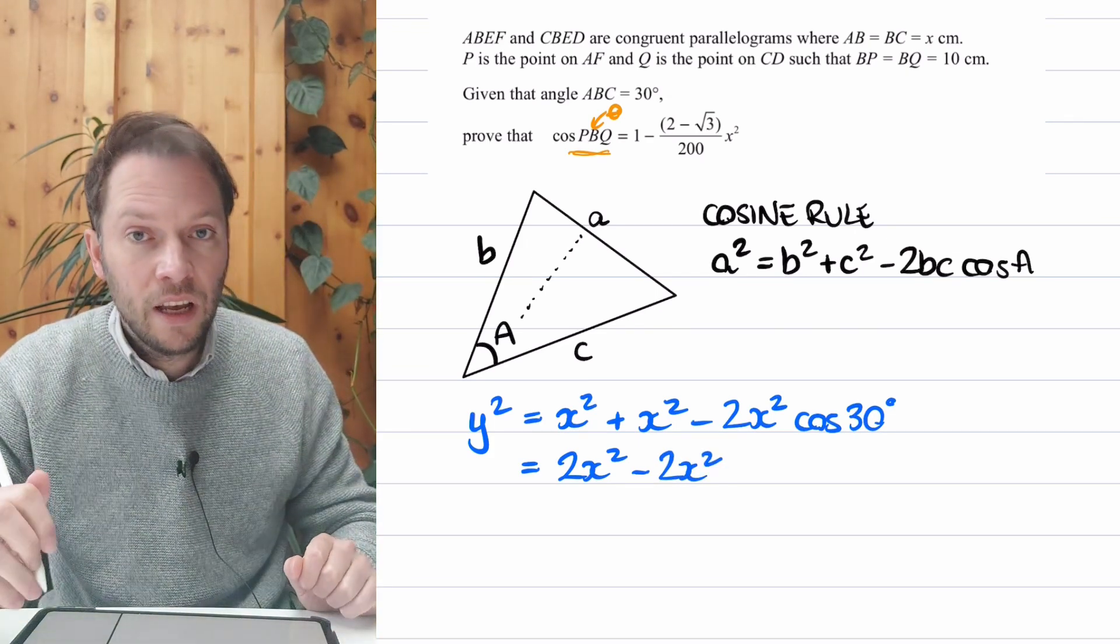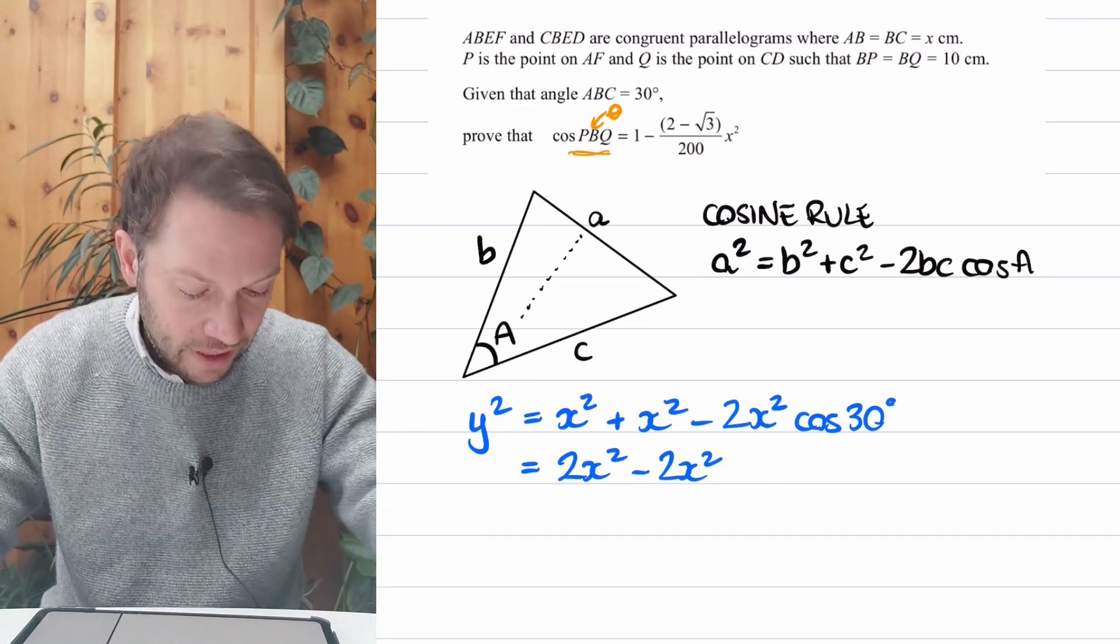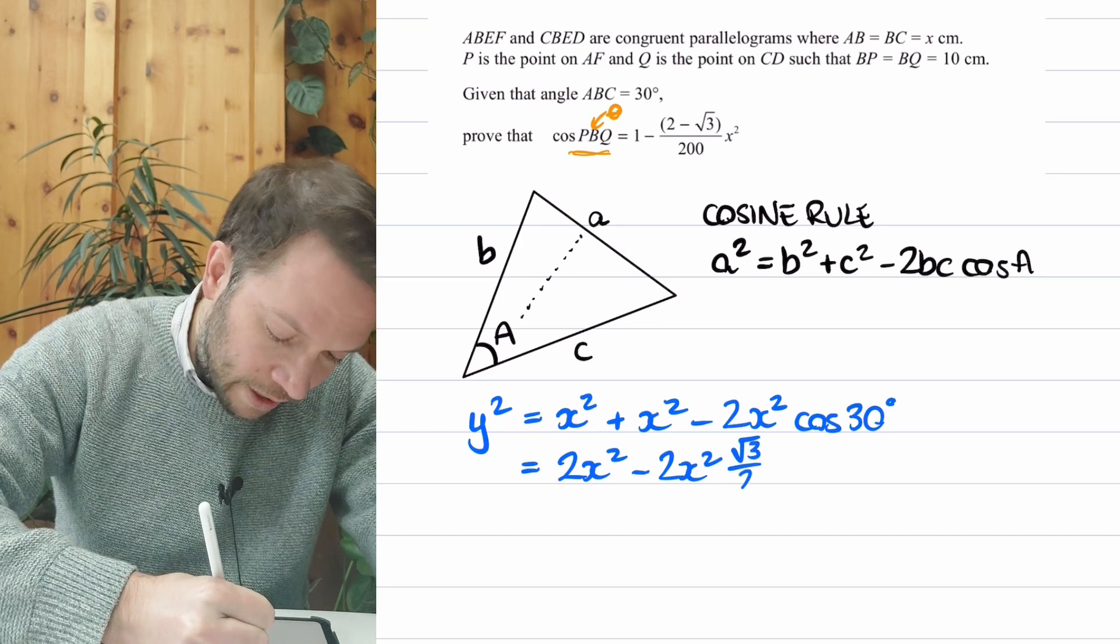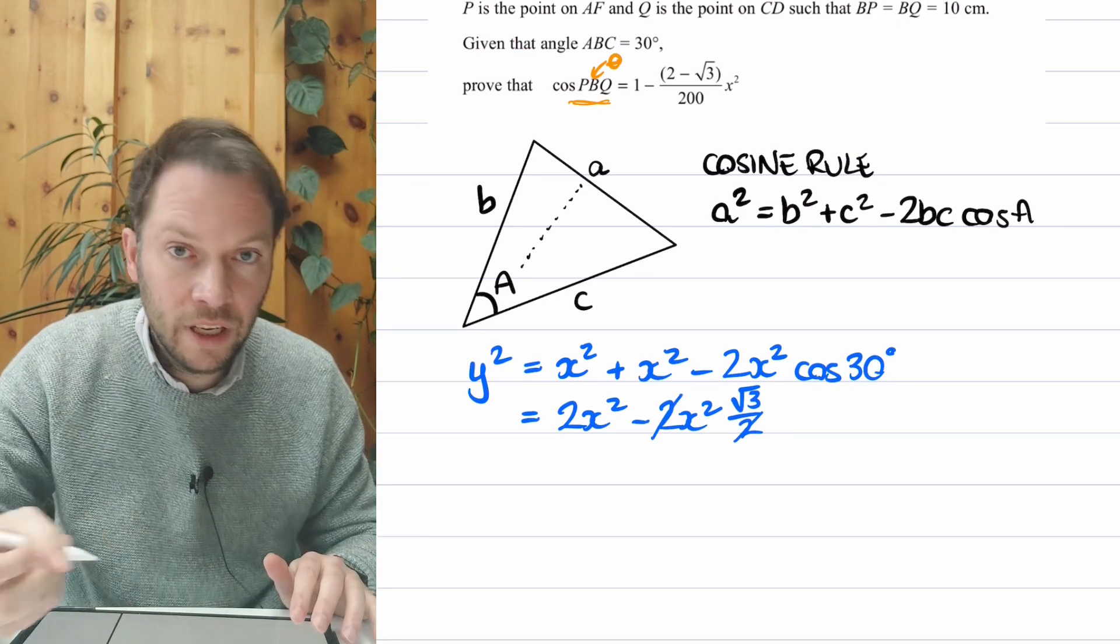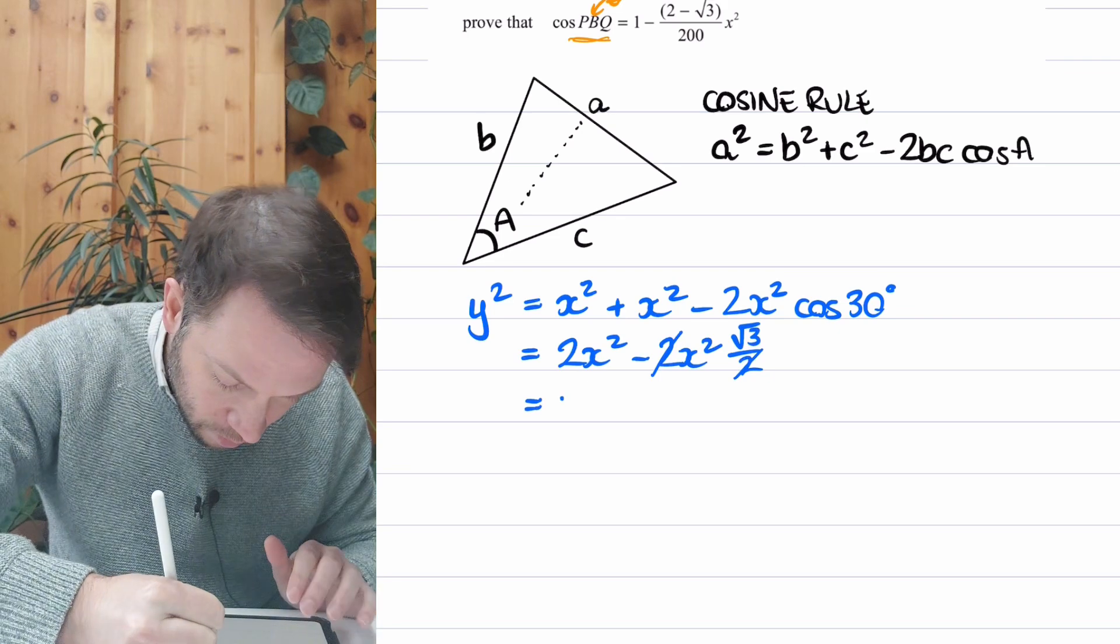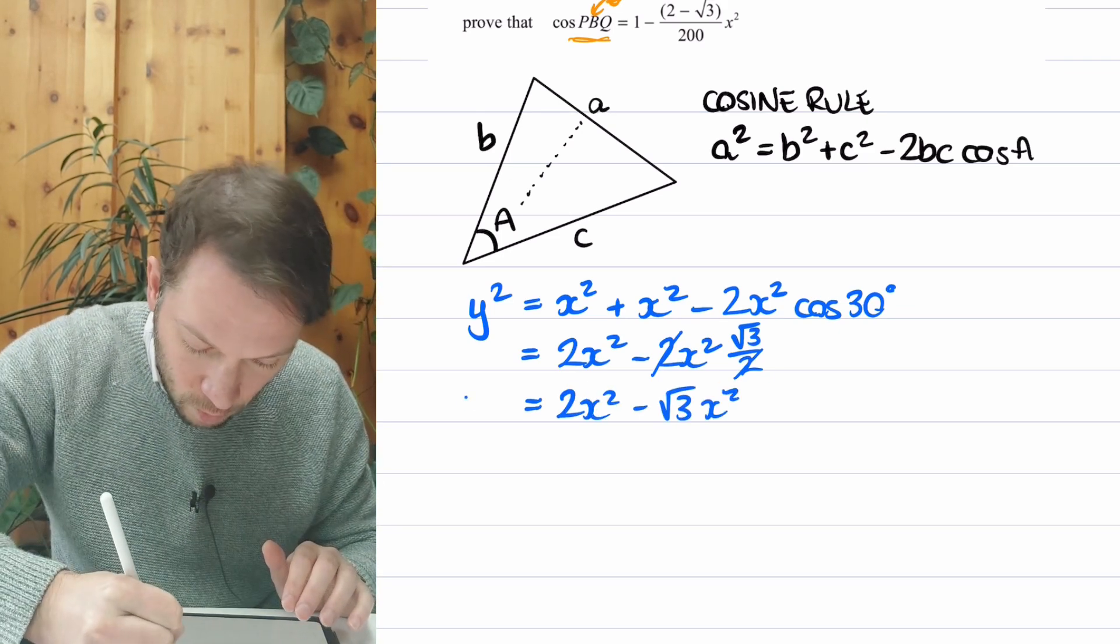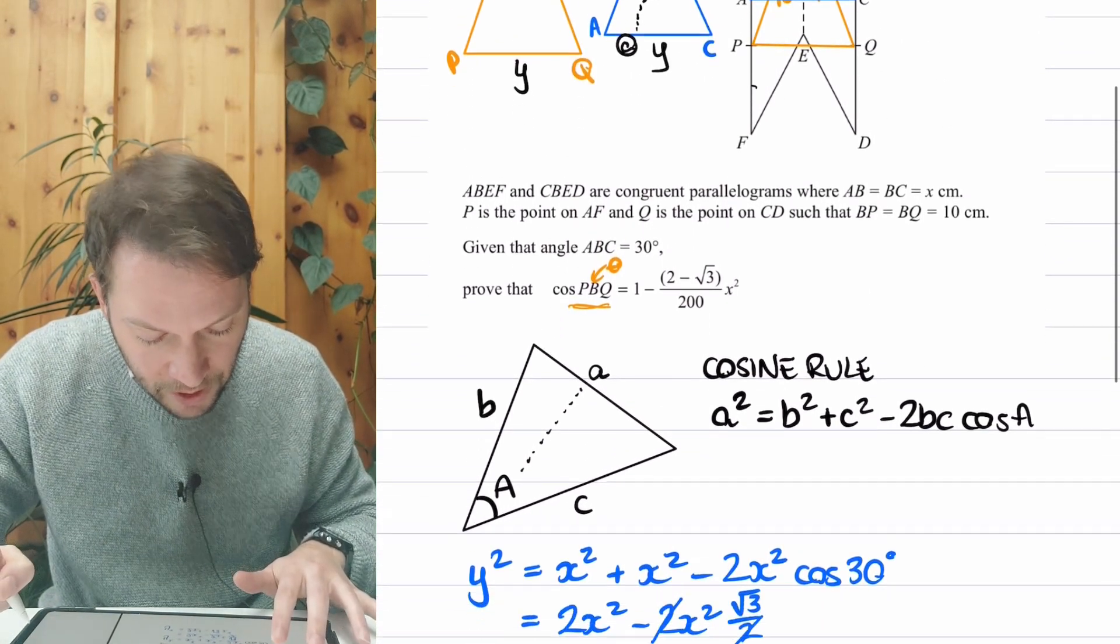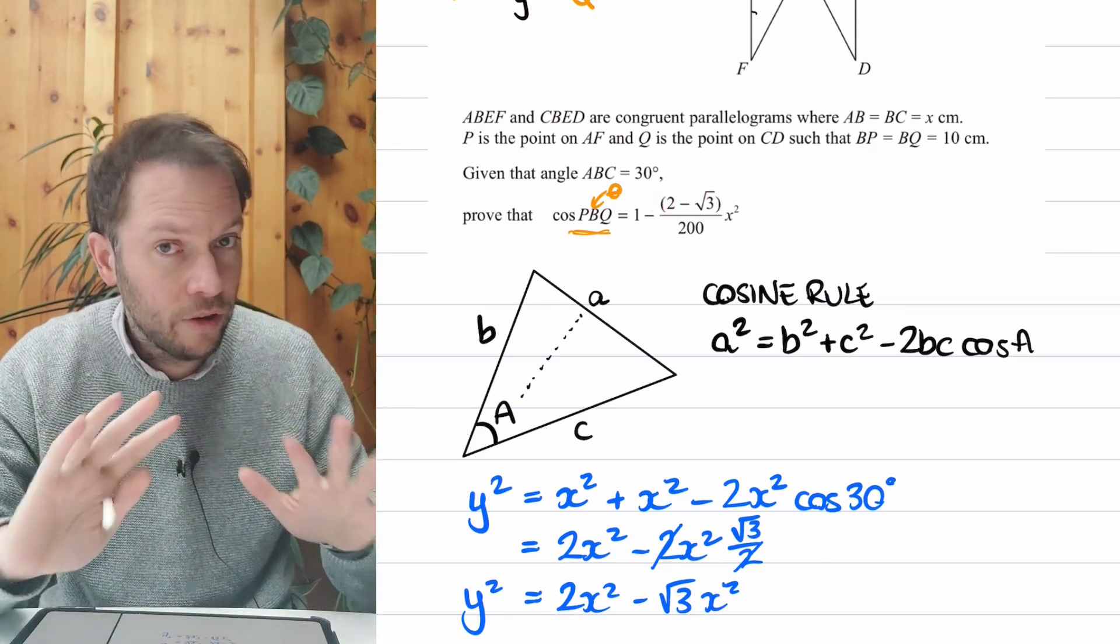What is cos of 30? Well, we explore exact trigonometric ratios in another video. But I'm just going to tell you cos of 30 is root 3 over 2. If you do that on the calculator, that's what it would give you. But you can work it out without a calculator. And then this over 2 here and this 2 here, they cancel. 2 over 2 just cancels to 1. So we're left with 2X squared minus root 3X squared. And that's what Y squared is. So we're going to use that in a moment. And if you look at this expression we're trying to get to, you can see you've got the 2 minus root 3. It looks like we're on the right track here.